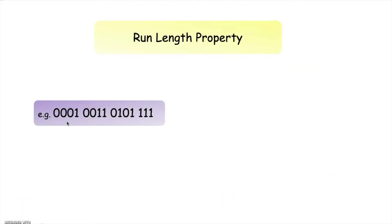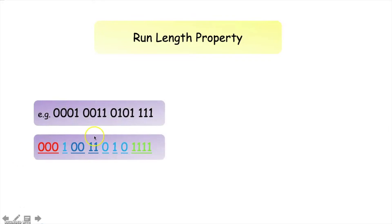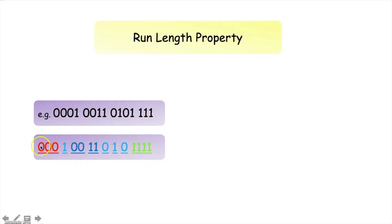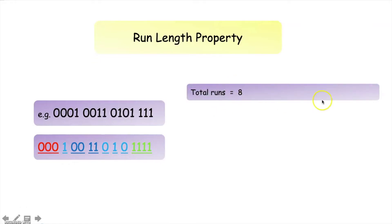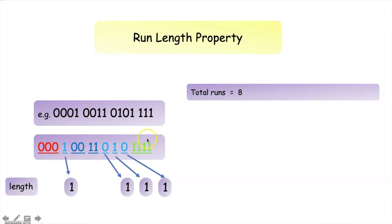Let us consider this example. In this sequence we can see the run of zeros and the run of ones — that is, a continuous sequence of zeros and a continuous sequence of ones. We can identify: run of zero, run of one, run of zeros, run of one, run of zero, run of one, run of zero, run of ones. So here we can see a total of 8 runs in this code sequence.